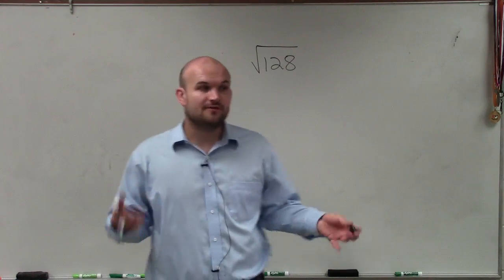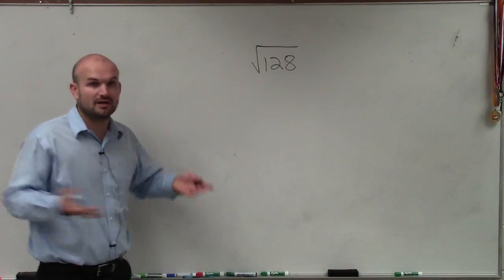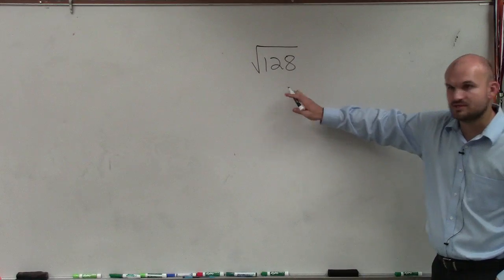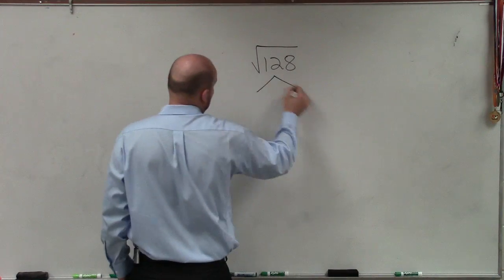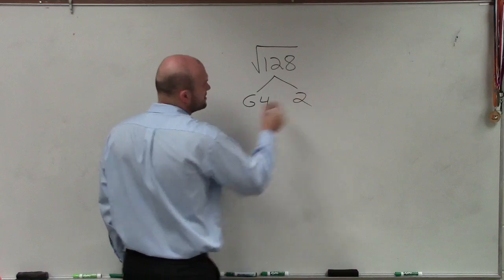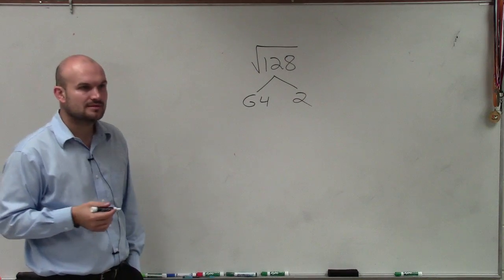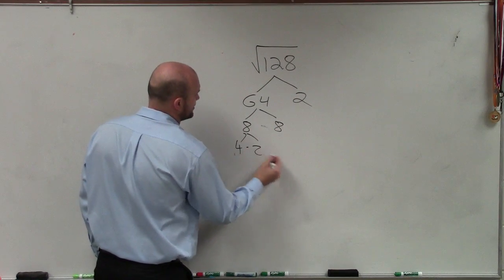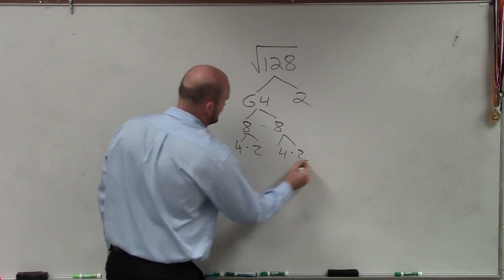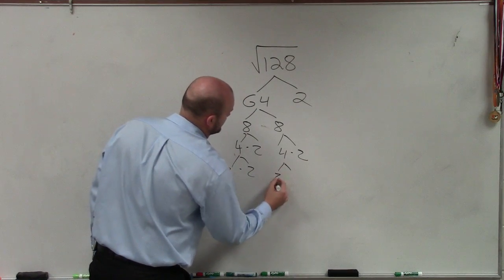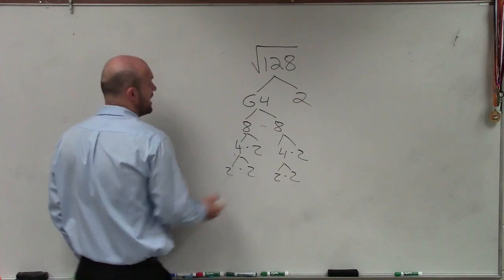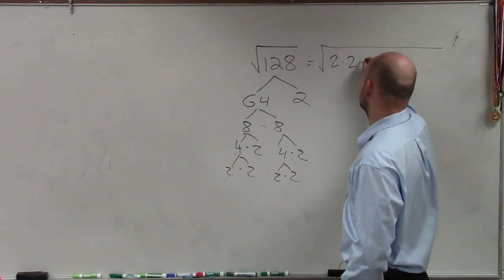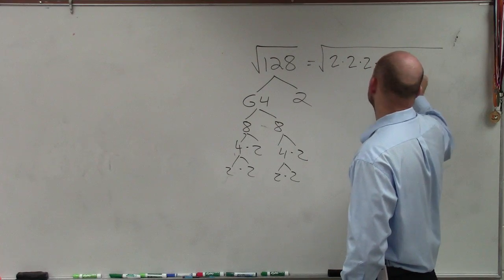Since 128 is even, we know we can divide it by 2. We can break this down: 8 times 8, 4 times 2, 4 times 2, 2 times 2, 2 times 2. So I can rewrite the square root of 128 as its prime factors: 2 times 2 times 2 times 2 times 2 times 2, which gives us seven 2's.